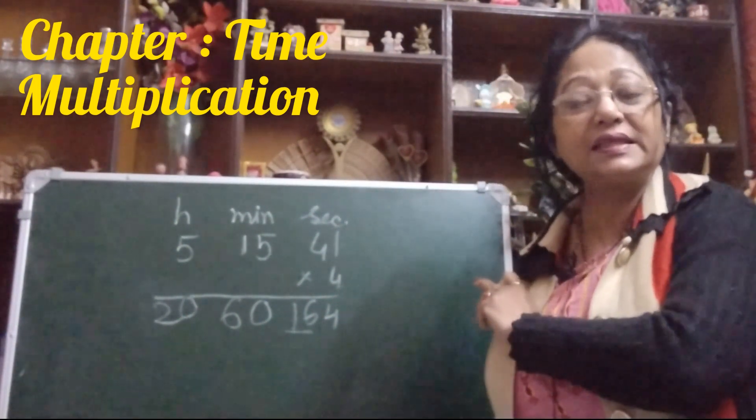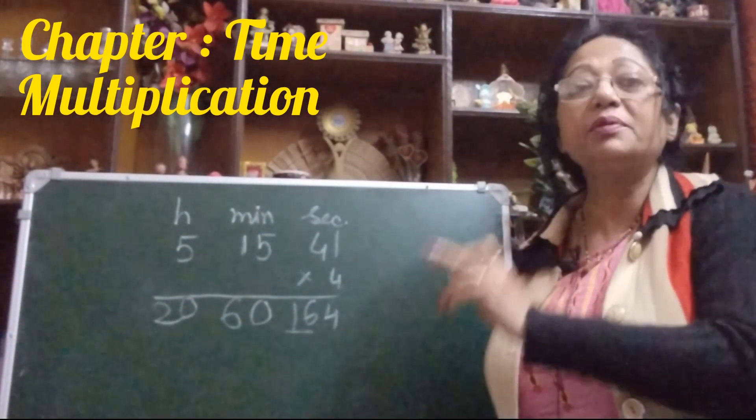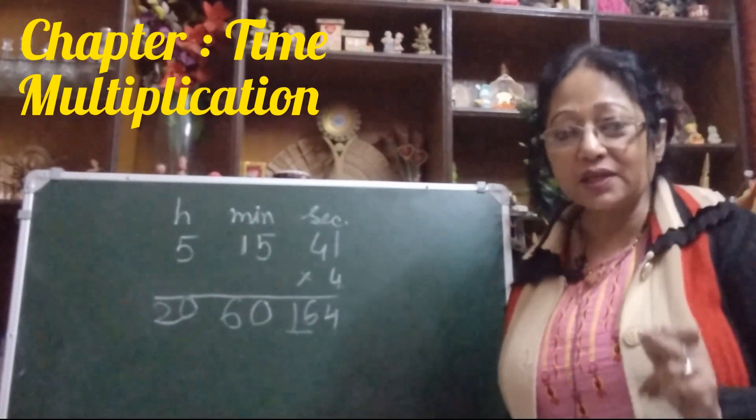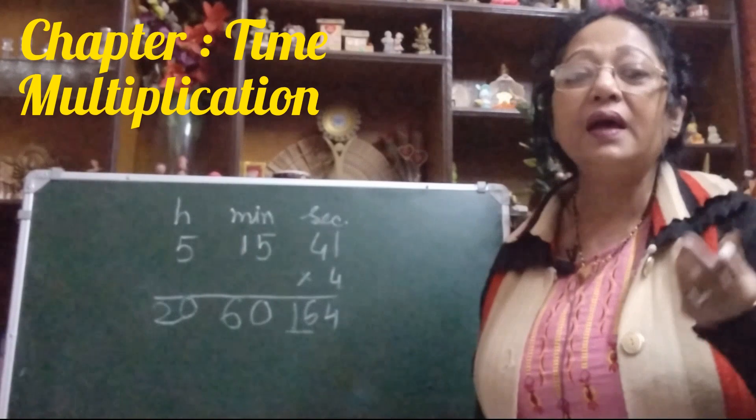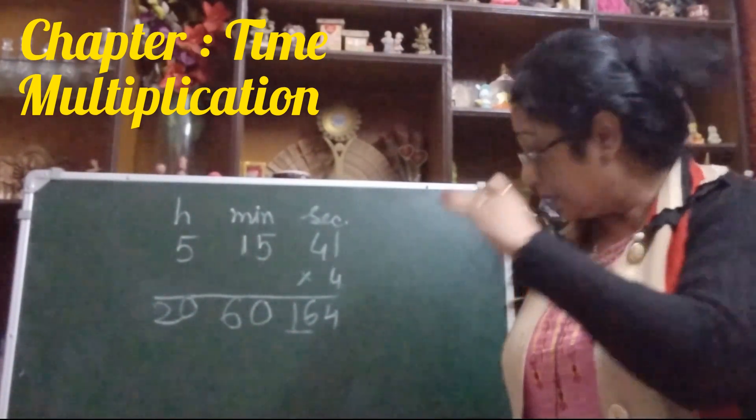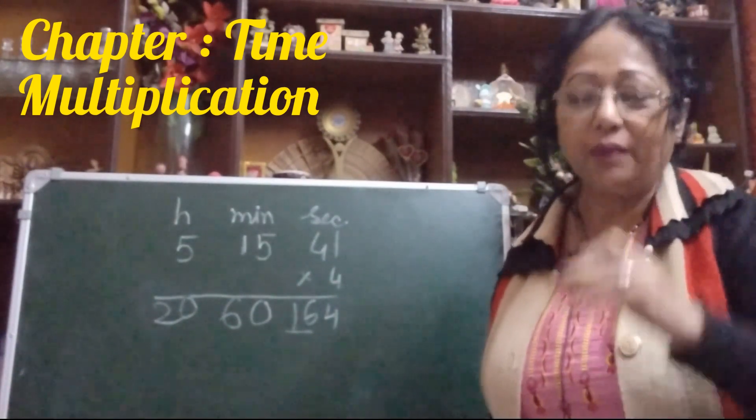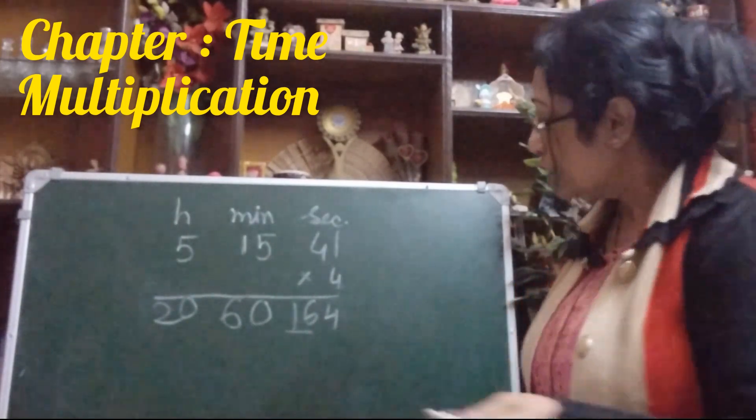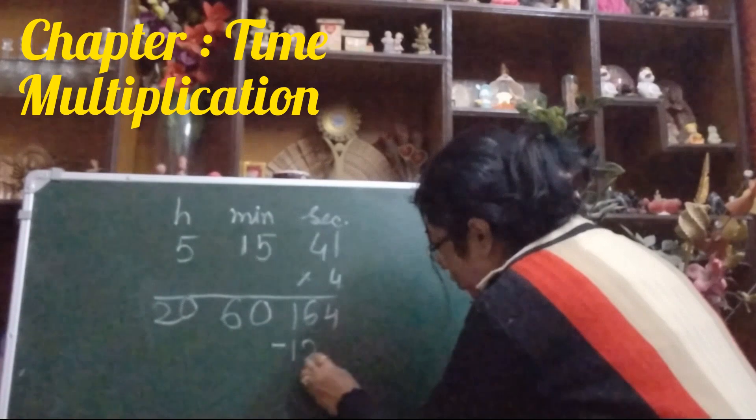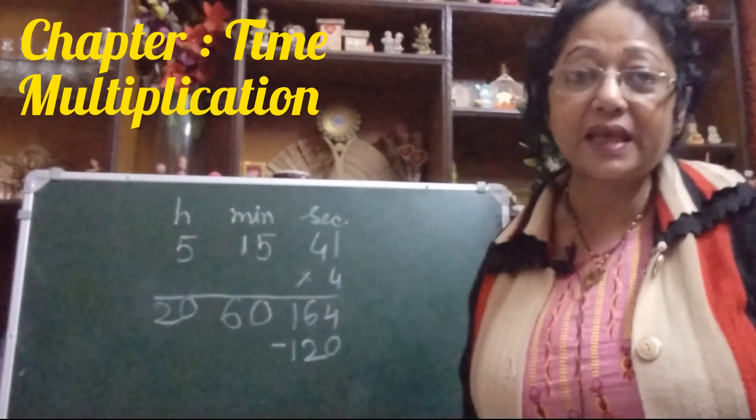You say the table of 6. Why? Because 16, second means one minute, 60. Say the table of 6: 6 ones are 6, 6 twos are 12, 6 threes are 18. Do not take 18, it is more than 16. So we will take 6 twos are 12. So 6 times 2 is 120. Simply subtract 120 from these 164 seconds.